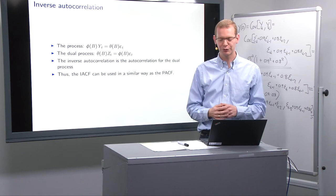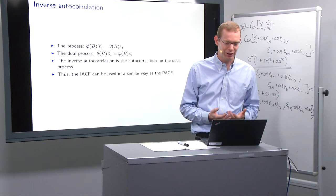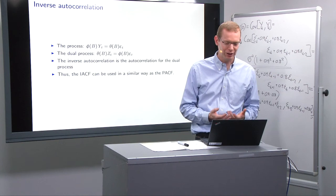But we can look at that some other time. We also have so-called inverse autocorrelation, which is giving about the same information as the partial autocorrelation function. Basically, what you look at, the dual process where you flip the polynomials, and then you look at the autocorrelation function of that inverse function.